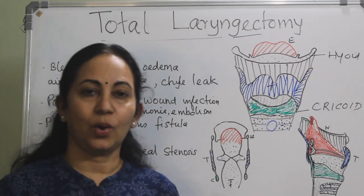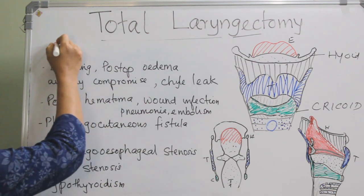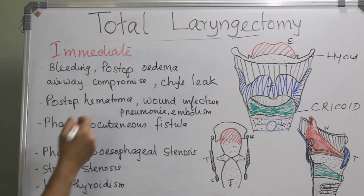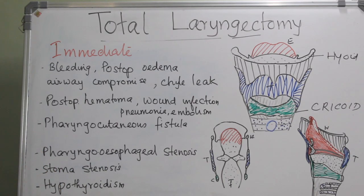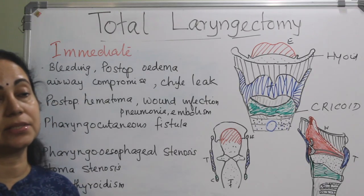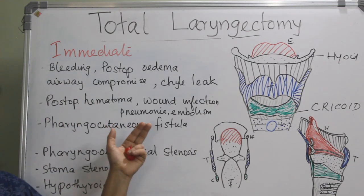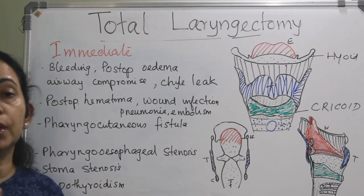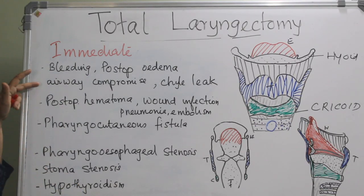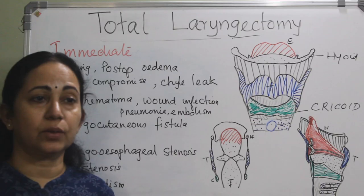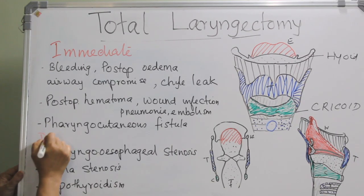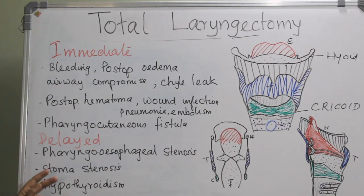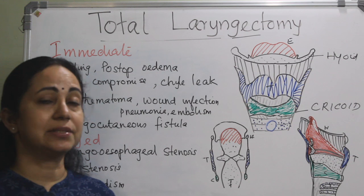Complications of total laryngectomy are divided into immediate and delayed. Immediate complications include bleeding, postoperative oedema, airway compromise, chyle leak, postoperative haematoma (presenting as skin swelling and erythema, requiring evacuation to prevent infection and sepsis), wound infection, pneumonia, embolism, and pharyngocutaneous fistula. The patient should be kept under constant monitoring with facilities for suctioning of the stoma available. Delayed complications include pharyngo-oesophageal stenosis, stoma stenosis, and hypothyroidism.